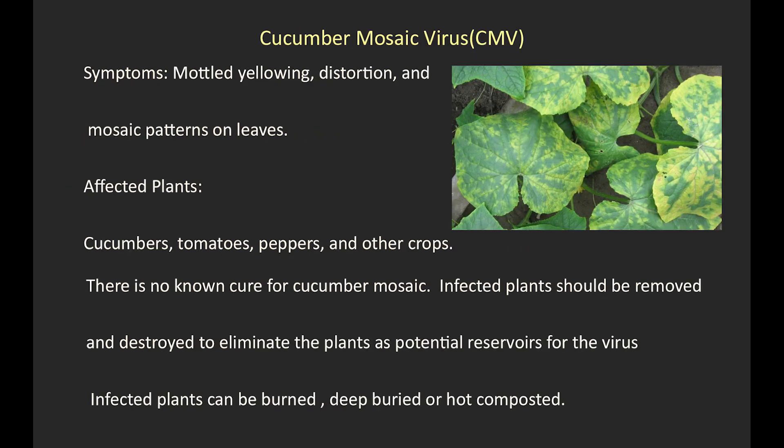8. Cucumber mosaic virus (CMV). Symptoms: mottled yellowing, distortion, and mosaic patterns on leaves. Affected plants: cucumbers, tomatoes, peppers, and other crops. There is no known cure for cucumber mosaic virus. Infected plants should be removed and destroyed to eliminate them as potential reservoirs for the virus. Infected plants can be burned, deep buried, or composted.